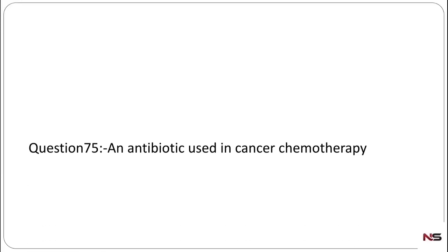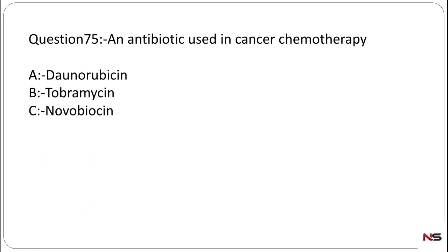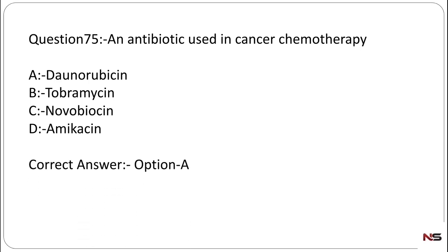Question number 75: Which antibiotic is used in cancer chemotherapy? Option A: daunorubicin, Option B: tobramycin, Option C: novobiocin, Option D: amikacin. All are antibiotics, but the only one used in cancer chemotherapy is daunorubicin. Option A is the correct answer.